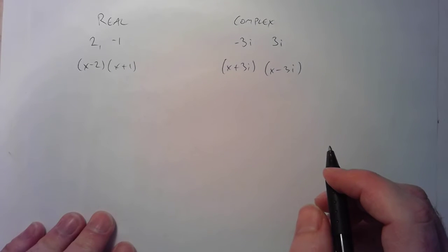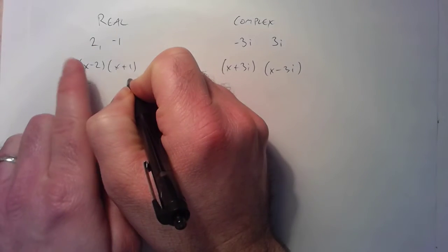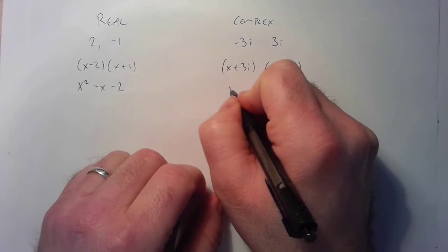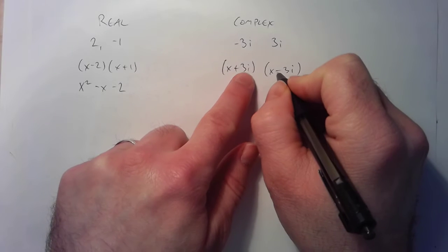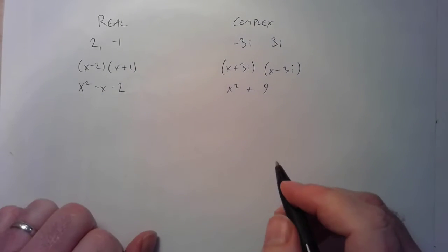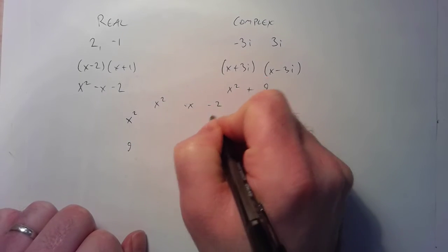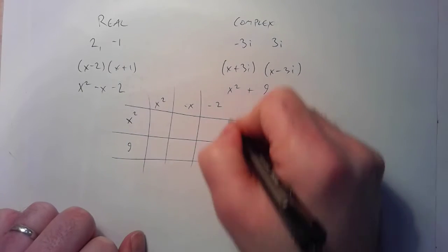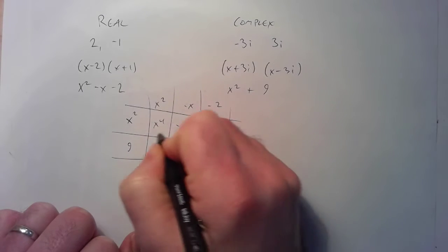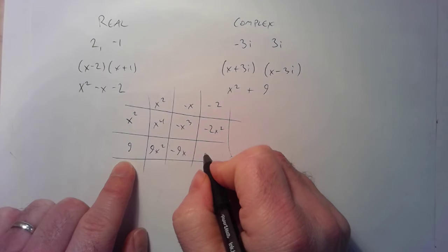To turn this into one polynomial, I just need to FOIL these and then put their products together. So x squared, x times negative 2, that's minus x and then minus 2. This one will be x squared minus 3ix plus 3ix and then plus 9. Now to put those two together, I'm going to put them in a grid: x squared plus 9, and x squared minus x minus 2. So this is x to the fourth minus x cubed minus 2x squared, and here's 9x squared minus 9x and then minus 18.